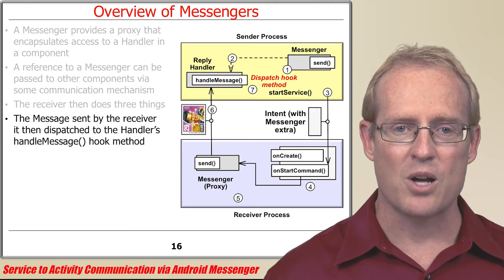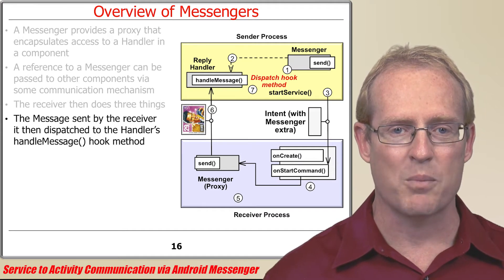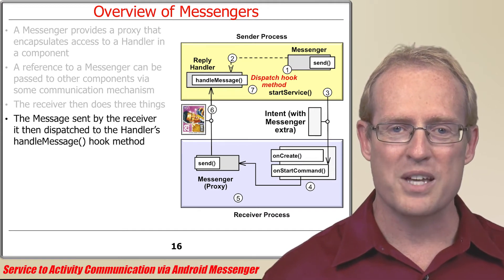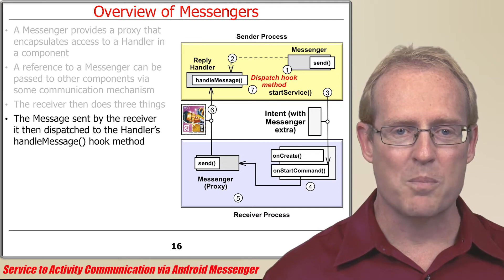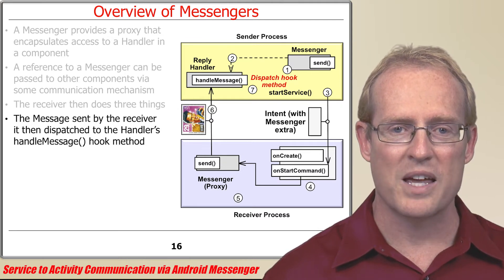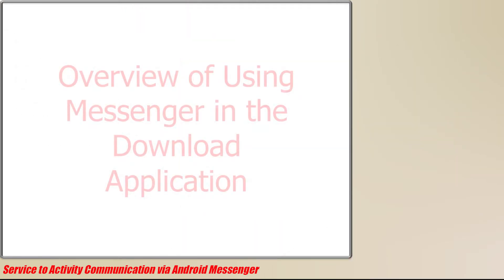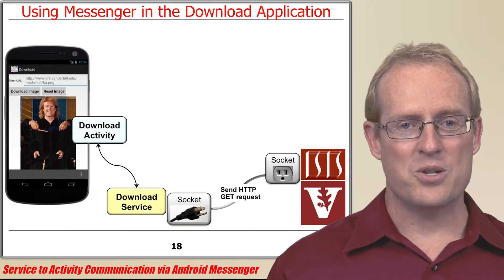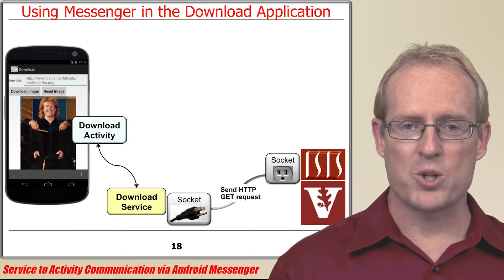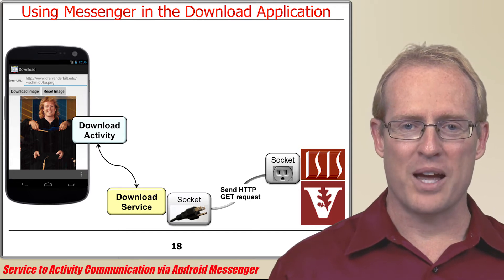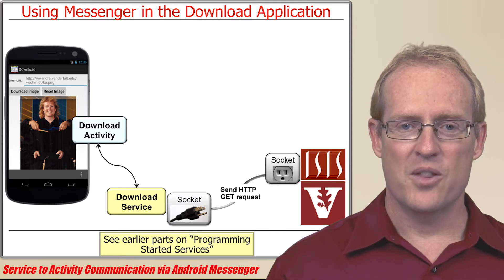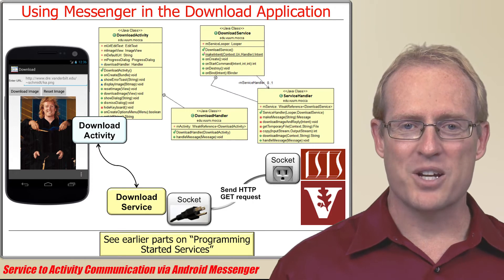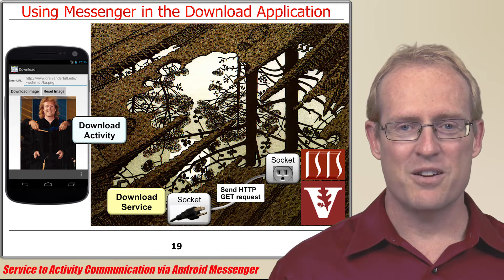The message sent by the receiver is ultimately dispatched to the handler's handleMessageHook method. For example, the download activity will use the path name returned by the download service to display the image to the user. We'll now start delving deeper into how a Messenger can be used to complete the download application shown in earlier videos. There are multiple classes, objects, and processes involved in this application, so we'll analyze it from several perspectives.